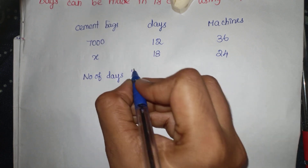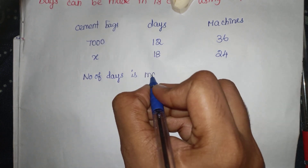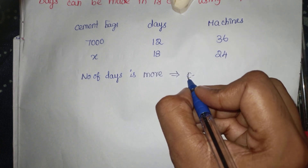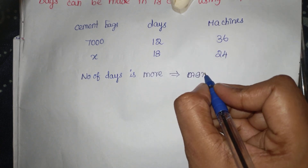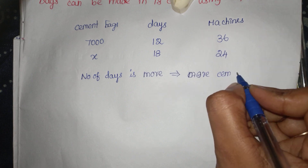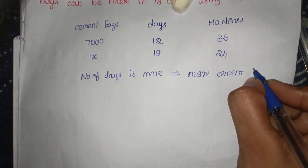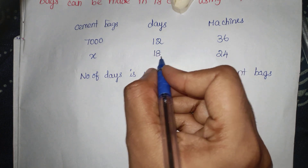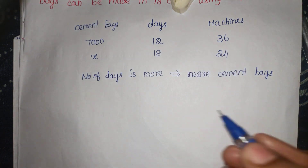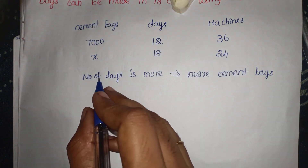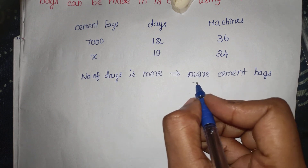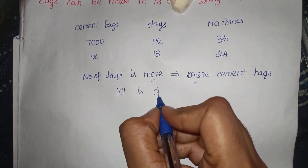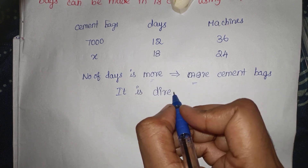So the number of days is more — it comes to add more. Then the cement bags are added as much — more cement bags. Every day it increases. When the bags are added, it increases, so it is more. It comes to direct proportion.